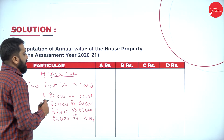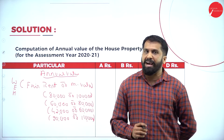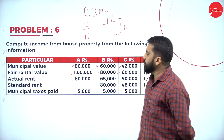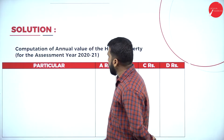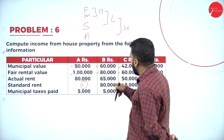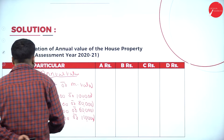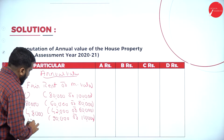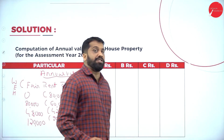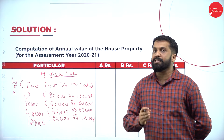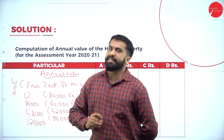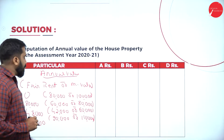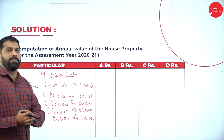Now we compare with standard rent — whichever is less. Standard rent values are 0, 0, 80,000, 48,000, and 1 lakh 20,000. Comparing 1 lakh with 0 — since standard rent is 0, we cannot compare, so we go with 1 lakh. Comparing 80,000 with 80,000 — same, so 80,000. The concept is: out of fair rent and municipal value take the higher; then compare with standard rent and take the lower.